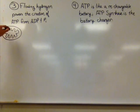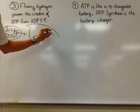Flowing hydrogen is what powers the creation of ATP, which is our cells' energy, from ADP and Pi.